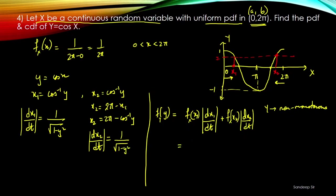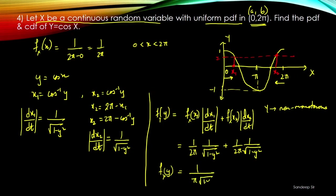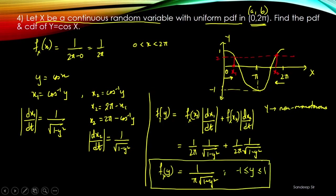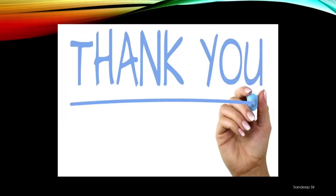The final result is f(y) = 1 / (π√(1 − y²)) for y in [−1, 1]. This completes the topic of functions of a random variable. Thank you for your time — see you in the next lecture with more topics on Random Signal Analysis. If you have any queries, let us know in the comment box.